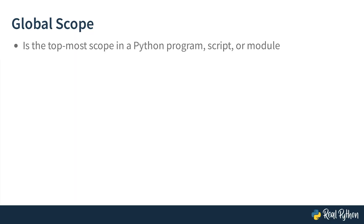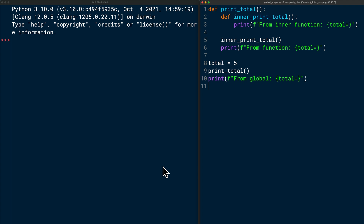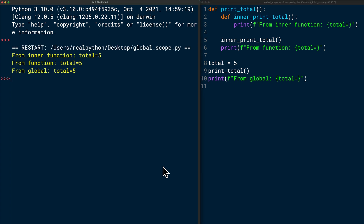Next up, global scope. The global scope is the topmost scope in a Python program, script, or module — names are visible from everywhere in your Python code, and there is only one global Python scope per program execution. In this example, the only definition of the total variable is total equals 5, defined in the global scope at the top level of the Python file — meaning it isn't wrapped in a function. When you run the code, you can see that the global variable total can be accessed from everywhere, with all print outputs showing the value 5 and no errors.